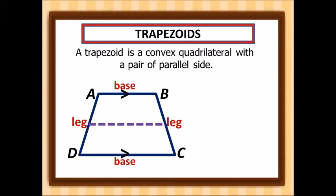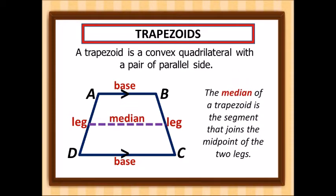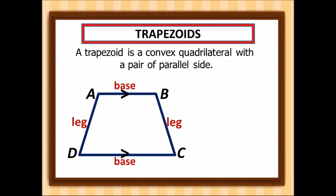Now let's look at the line connecting the two legs. This is what we call the median. The median of a trapezoid is the segment that joins the midpoints of the two legs.